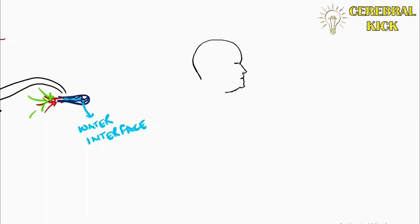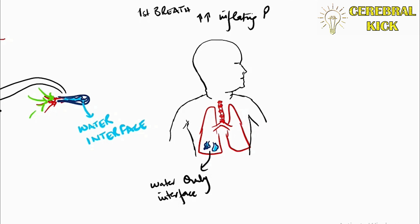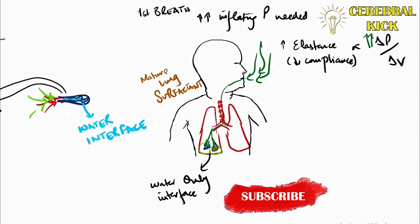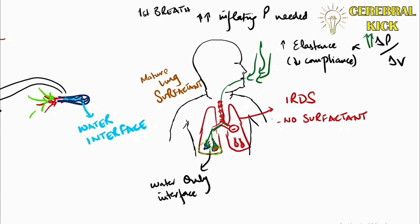And this is the reason why surface tension is so important in a newborn infant. It's all water in the lungs and that first breath of the newborn requires a lot of inflating pressure because the elastance is high due to increased surface tension. So, when the lungs are not mature, in a premature infant, in infant respiratory distress syndrome, the surfactant is reduced as a result of which a very high inflating pressure is required in such premature infants.